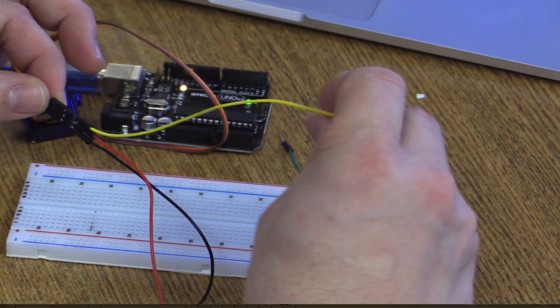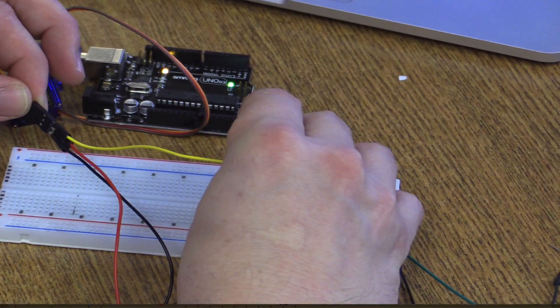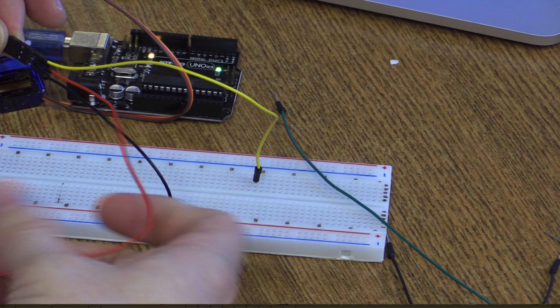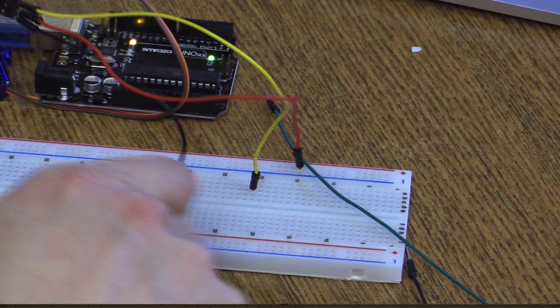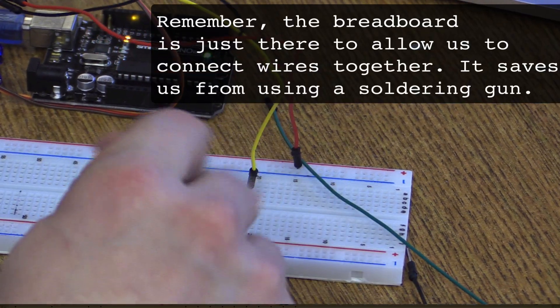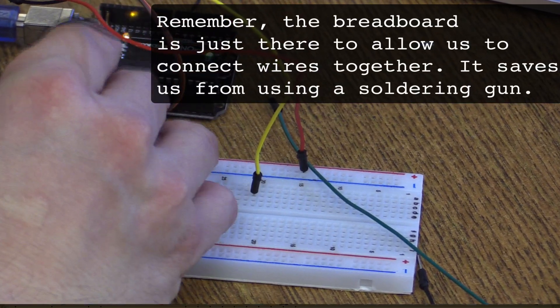We're going to go ahead and plug the yellow one to a random spot on our board. The red is going to go to the positive bank. And then the black one, anywhere on the positive row is okay, is going to go to the negative one.